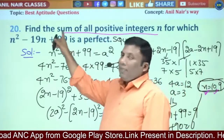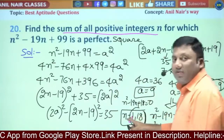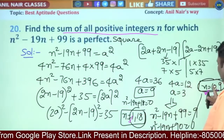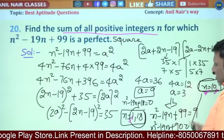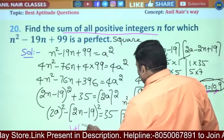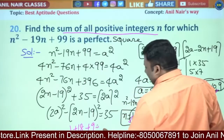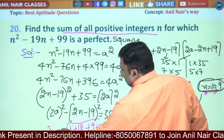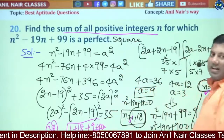The question asks for the sum of all positive integers N. 1 is a positive integer, 18 is a positive integer, 10 is a positive integer, 9 is a positive integer. So the answer is 1 plus 18 plus 9 plus 10, which is 19 plus 19, giving answer 38.